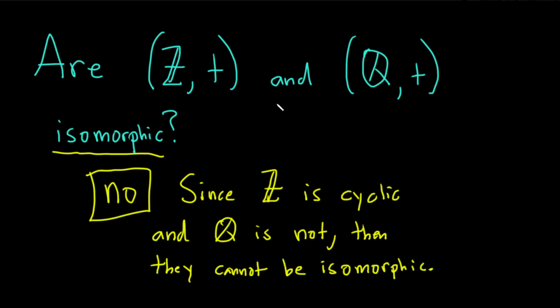Because if there was an isomorphism between these two groups, because ℤ is cyclic, then ℚ would also have to be cyclic. But we know ℚ is not cyclic.